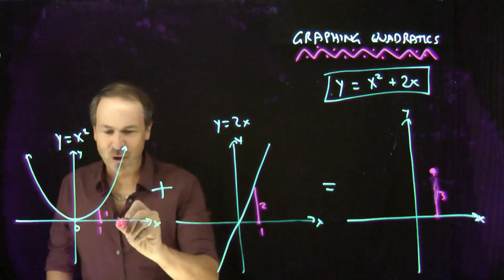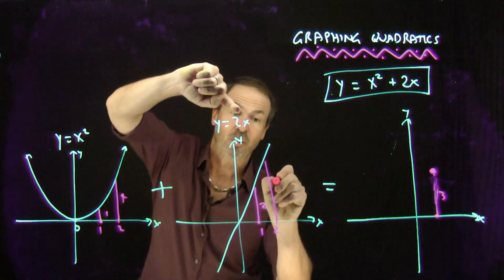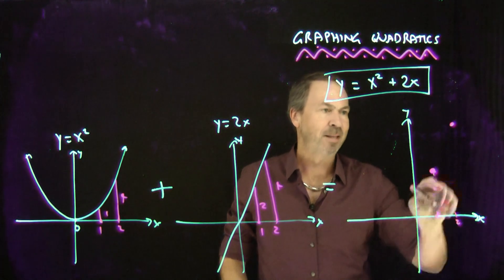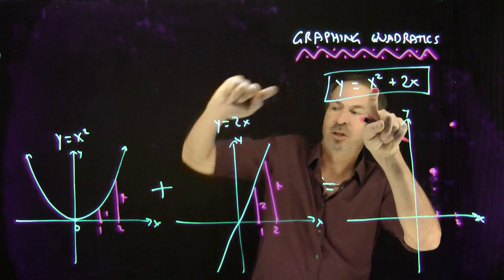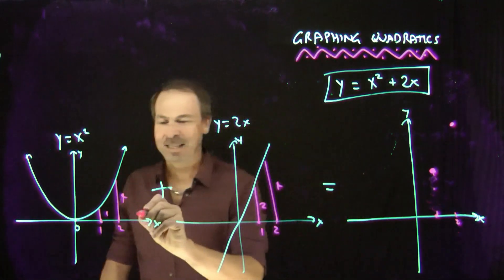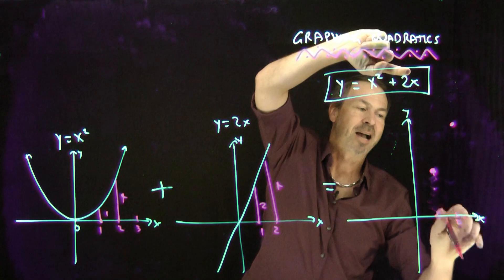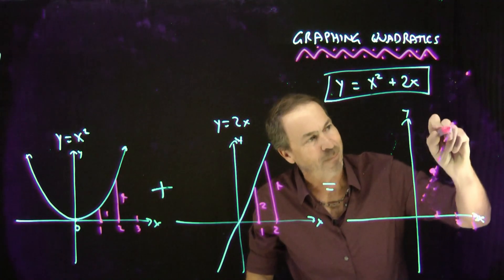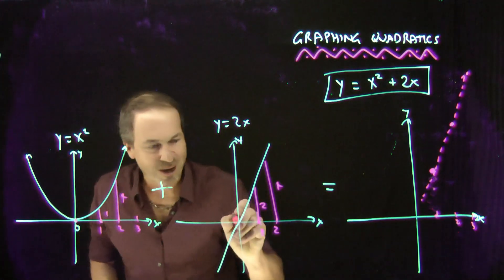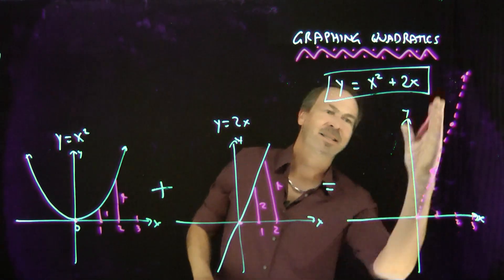At x equals 2: x squared gives height 4, and 2 times 2 is also 4, so I want a height of 8. At x equals 3: height of 9 from x squared, plus 2 times 3 is 6, giving a height of 15. So this graph is definitely going up on the right side. At x equals 0, both graphs give 0, so the combined graph goes through the origin. On the right-hand side it's definitely going up.